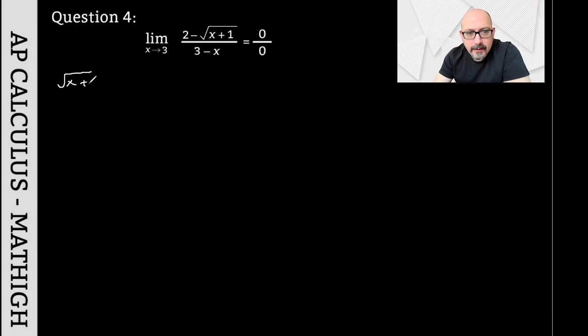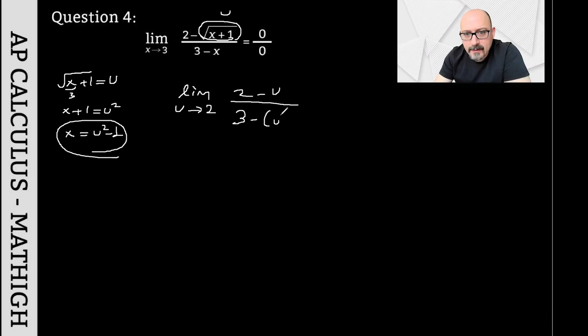I'm calling the square root of x plus 1, u. Then u squared is x plus 1. I squared both sides, and plus 1 thrown over to the other side gives x equals u squared minus 1. Now let's rearrange the question. This time, let the limit approach u. If x is approaching 3, I took the square root of 3 plus 1, which is 4, and that gives me 2, so u is approaching 2. The top part is 2 minus u. The bottom part is 3 minus x, so instead of x I'm writing u squared minus 1.